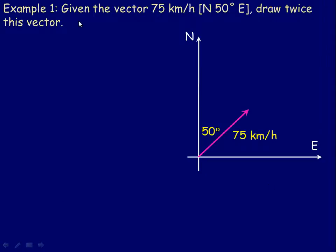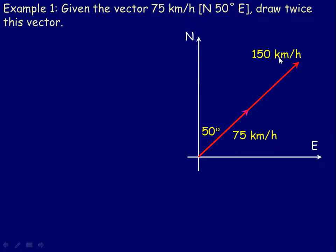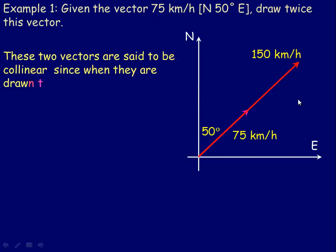In the example on the next page, we're given this vector: 75 km per hour at a direction of north 50 degrees east. So there's the 50-degree angle here. We're asked to draw the vector that's twice as long. That vector would look like this, and since the magnitude of the original is 75, the vector twice as long would be double the magnitude — so 150 km per hour. The direction would be the same.